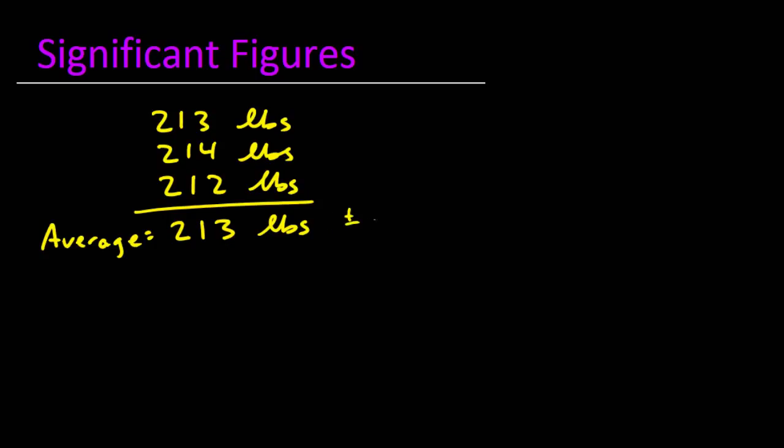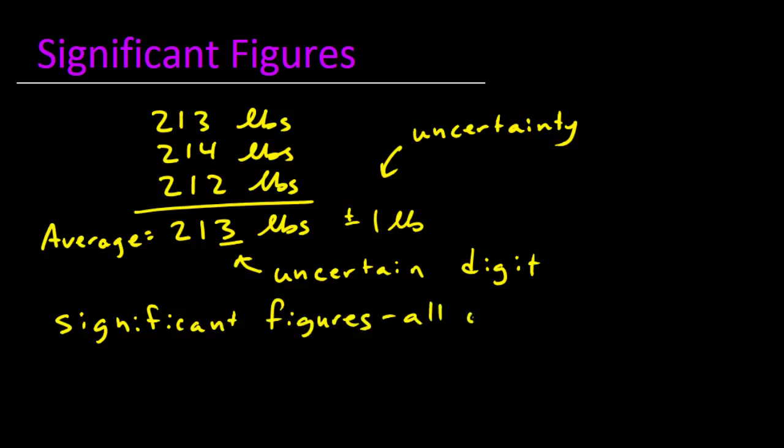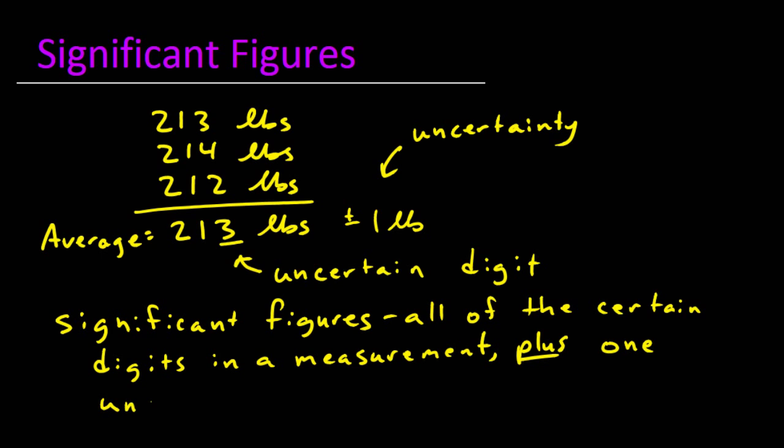We can also say that the uncertainty is plus or minus one pound, and that the last digit in the measurement is the uncertain digit. This leads to a term that we will hear often throughout this course, called significant figures. We define significant figures as all of the certain digits in a measurement plus one uncertain digit.